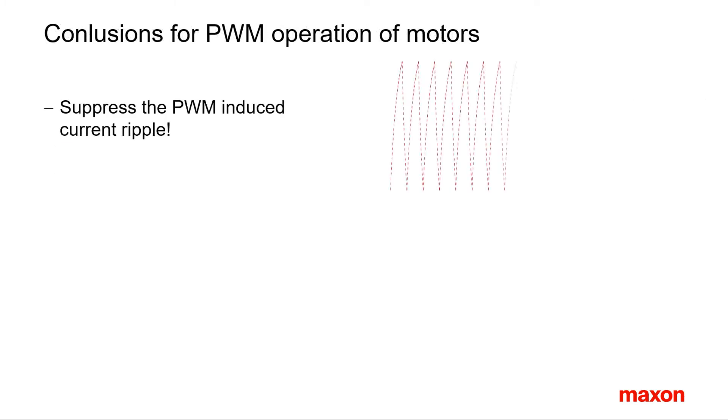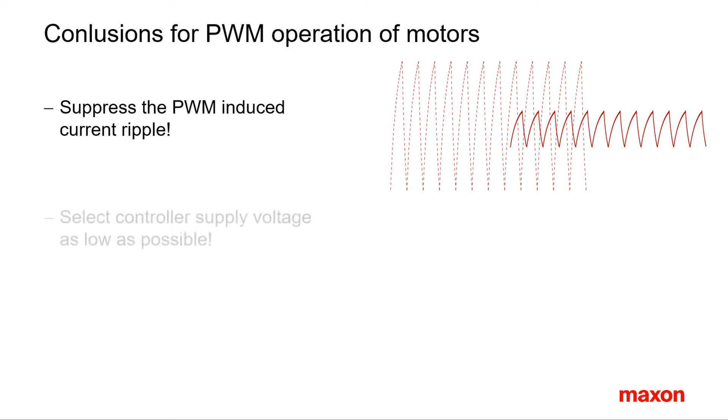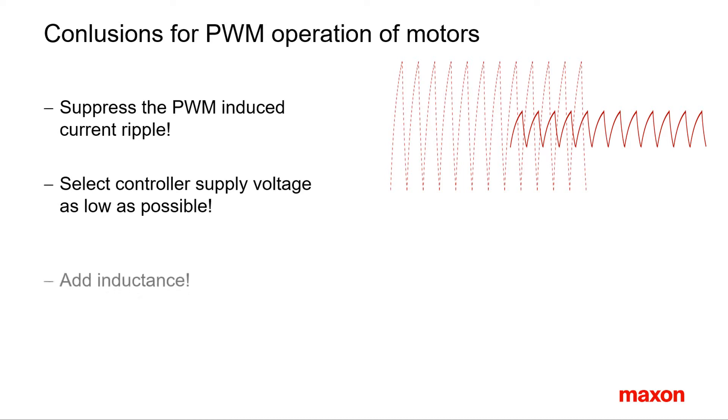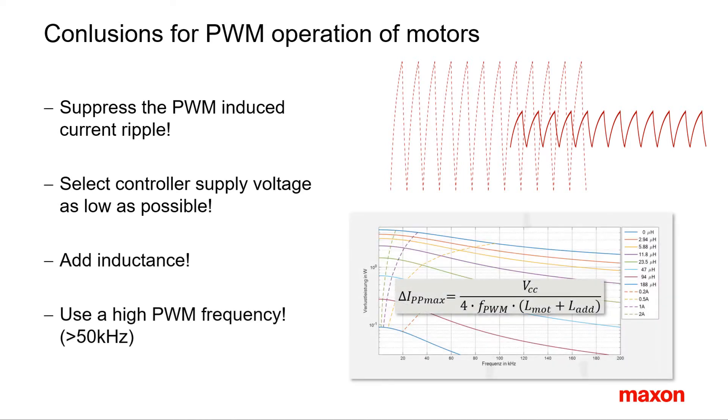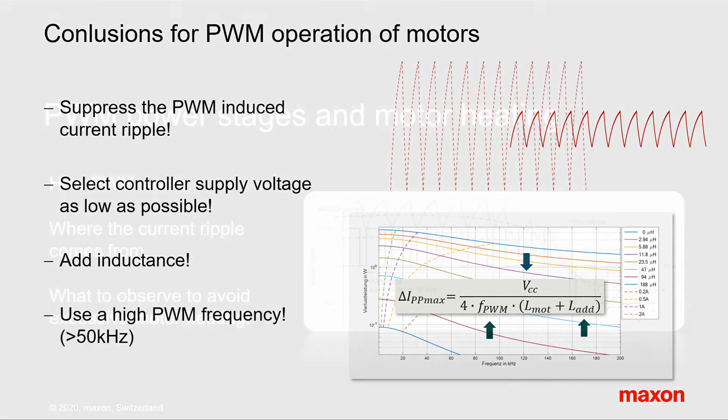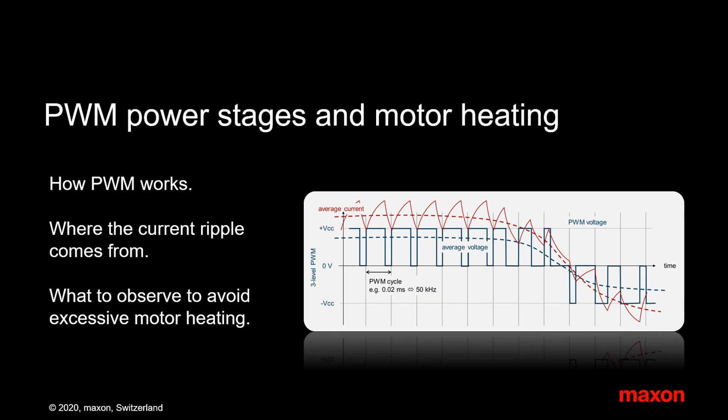A summary. Reduce the current ripple as much as you can. Select a low supply voltage in order to maximize the PWM duty cycle. Add extra inductance and use PWM frequencies of 50 kilohertz and above. Maxon controllers follow these rules as well. They have a high switching frequency and a built-in motor chokes to be well adapted to the low inductance Maxon windings. That's it.